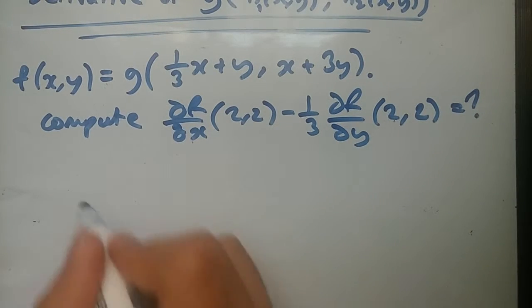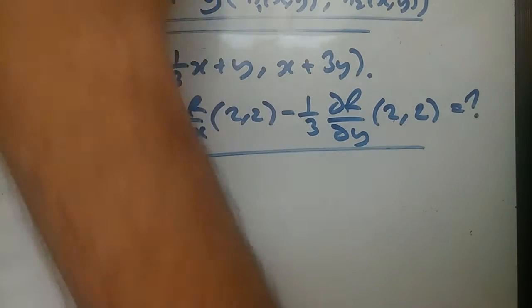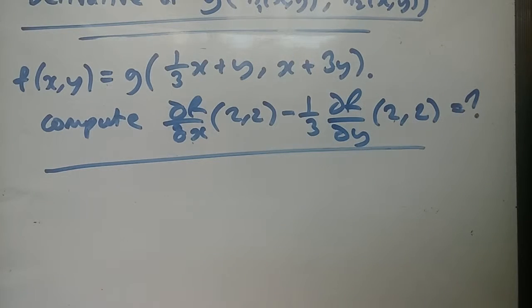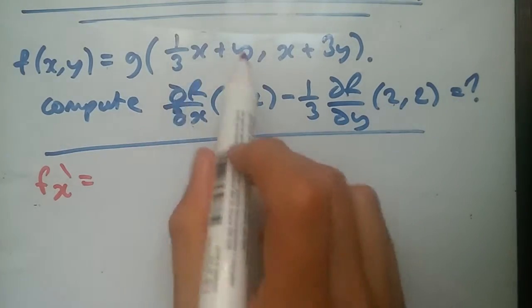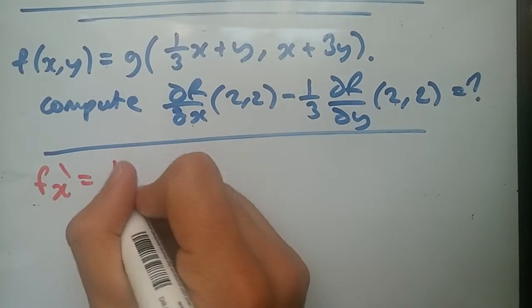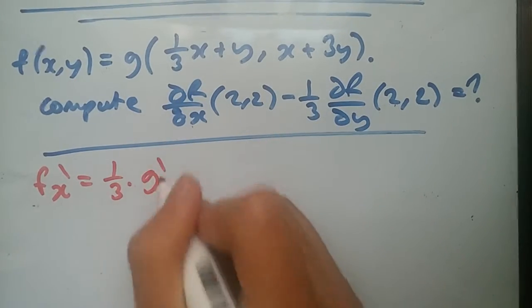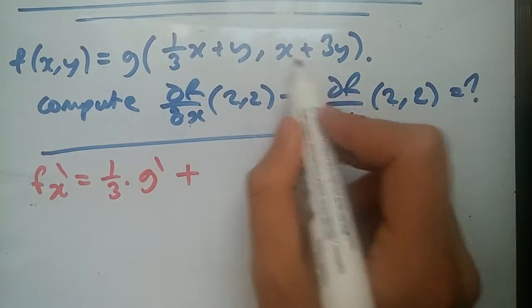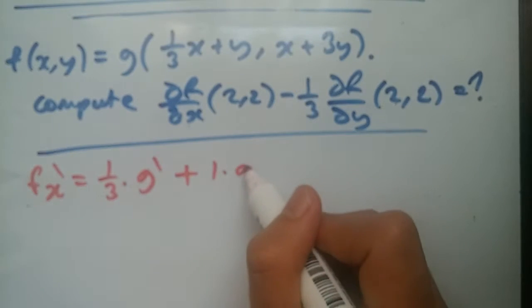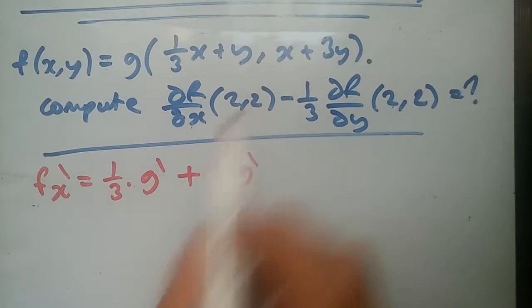I want us to compute the partial derivative at the point (2,2) minus 1/3 times the partial derivative dy at another point (2,2) again and see what we get. Repeating the same as above, let's first calculate the partial derivative with respect to x. To give the coefficients with respect to x, we get 1/3 times g prime, plus now this part. Differentiating this part using chain rule, we get just 1 times g prime times the function itself.